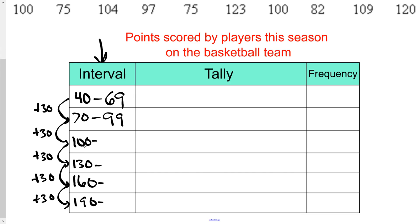The third interval starts at 100 and goes up to a number. We can either add 30 to 99, or note that the next interval starts at 130, so this one must end at 129. Continuing: since 160 starts the next interval, the previous one ends at 159, and this one must end at 189. Since there's no next interval to look at, we just add 30.